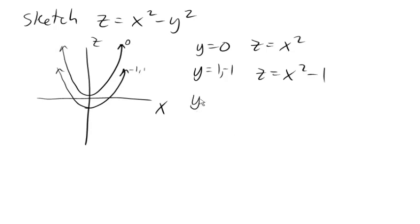And if y was 2 or negative 2, we're going to have z equals x squared minus 4. And so that's going to be shifted down even more. So negative 2 or 2 there. And so that gives us some idea what this is going to look like.